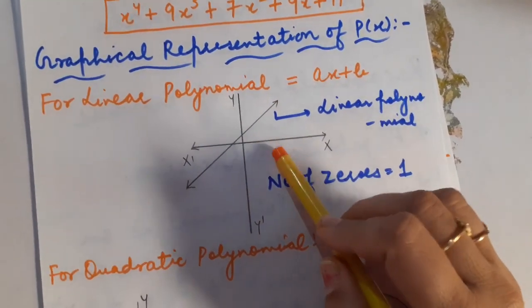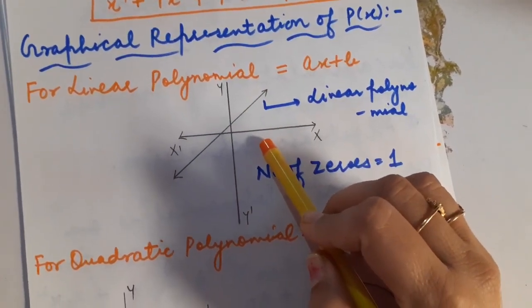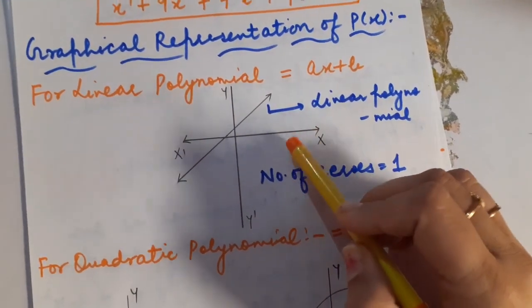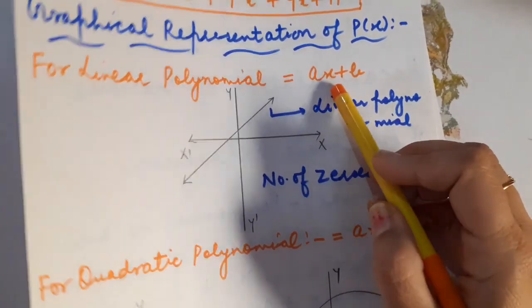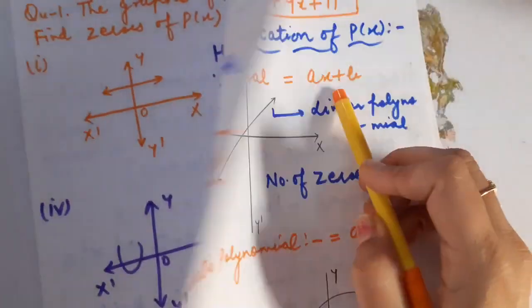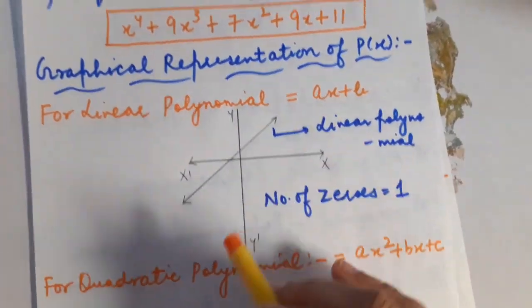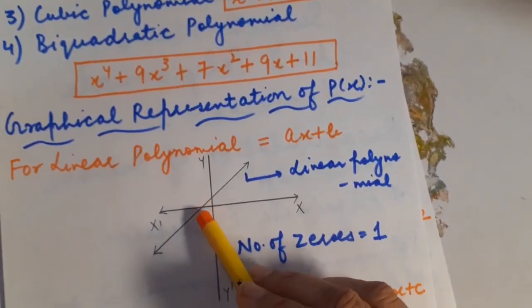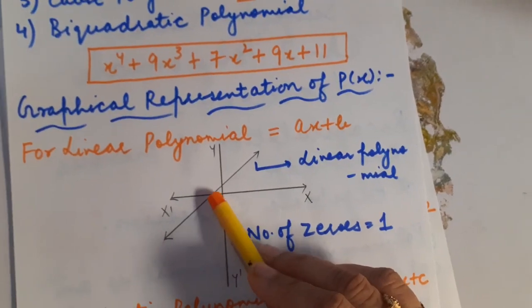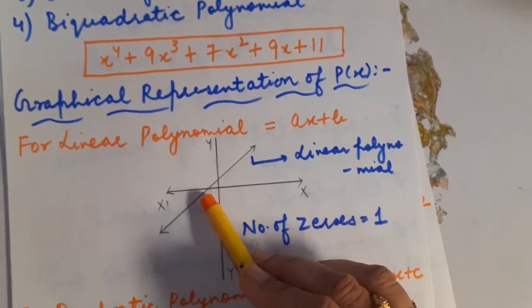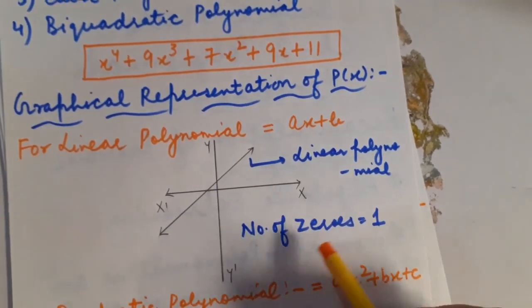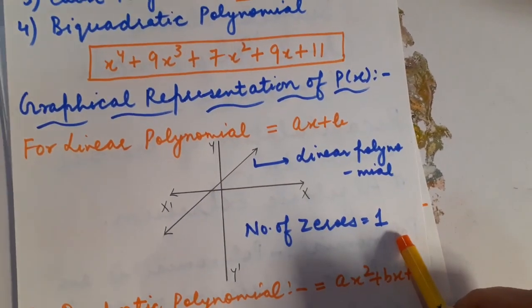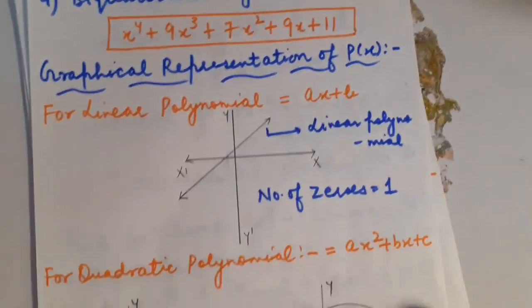Children, you know very well what are the zeros of the polynomial — basically they are the solution of that polynomial. Here, the graph is going to intersect the x-axis at one point, so definitely the number of zeros will be 1.